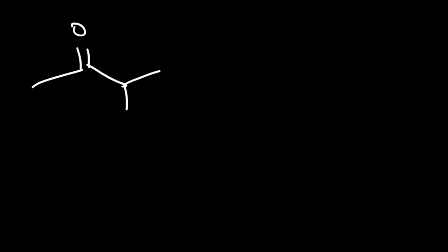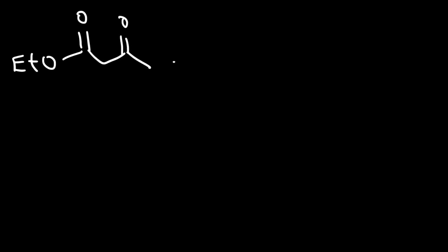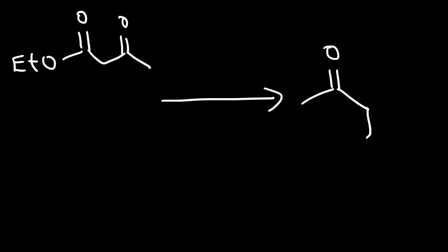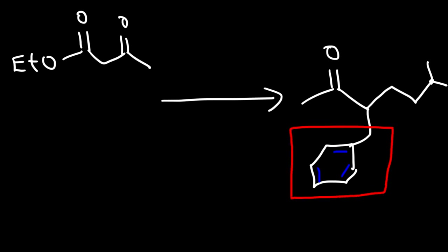We could make any type of ketone with this generic formula using the acetoacetic ester synthesis reaction. Sometimes you may need to determine the reagents needed to produce a certain type of ketone. In this example, what reagents do we need to make a ketone that looks like this? You need to realize that this is the first R group, or you can make it the second — the order doesn't really matter. And here is the other R group, R2.